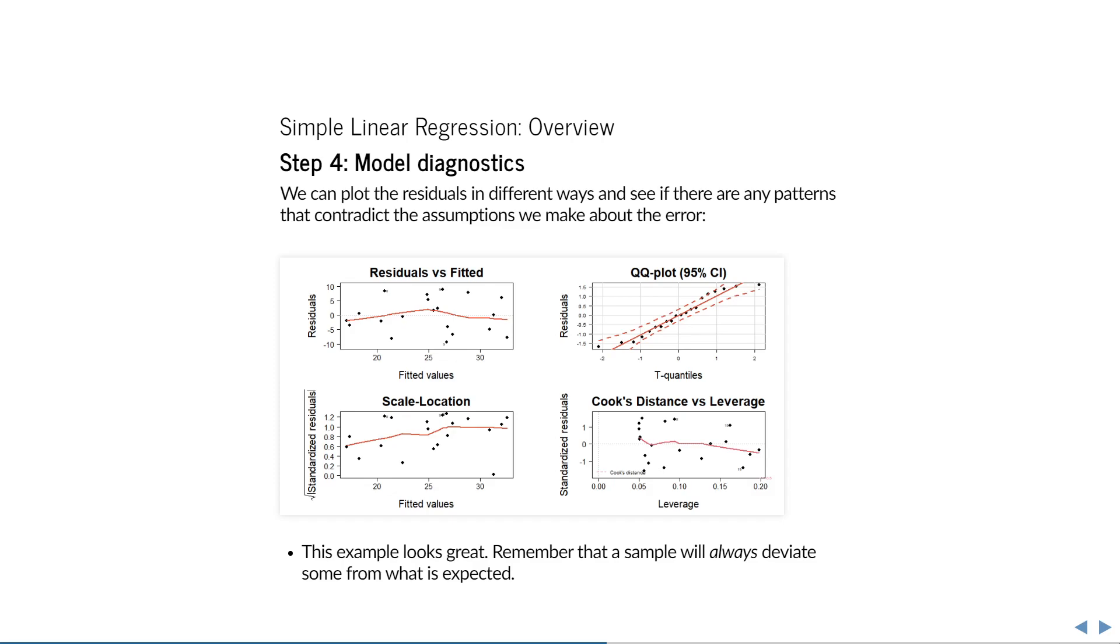The plot below it is called the scale location plot. It can give an easier indication of whether the variance is more or less constant, because it plots a transformation of the residuals that causes them all to be positive. If there were non-constant variance, then we would see a clear trend going up or down. In this particular example, the red smoothing line appears to go up slightly, but this is hardly a problematic example.